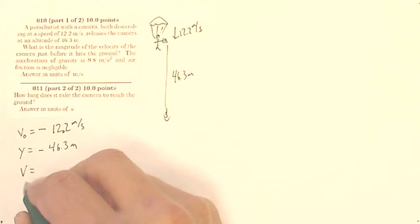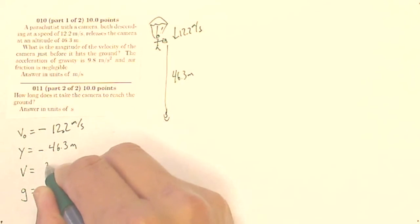The acceleration of gravity is 9.8, so gravity is negative 9.8 meters per second squared. And I'm looking for my final velocity.